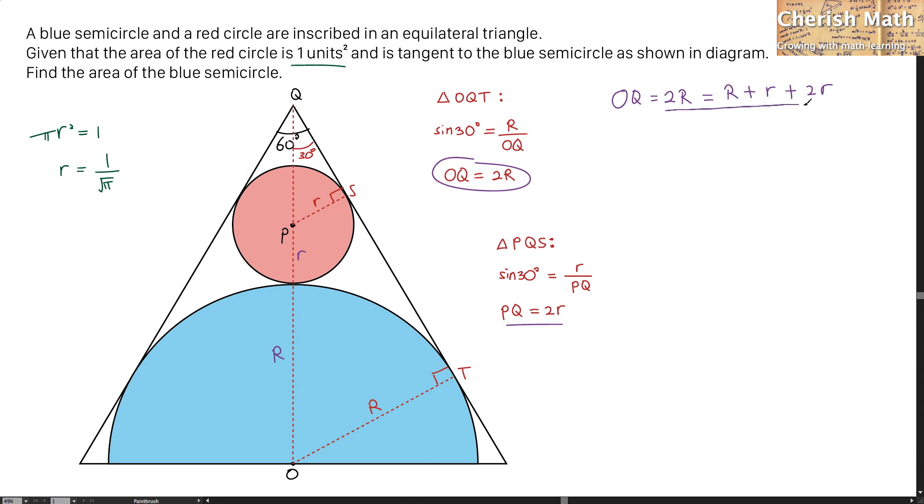To simplify this equation, uppercase R equals three times lowercase r. I'm going to substitute the value of lowercase r with one over the square root of π. What I'm getting for uppercase R is three over the square root of π.